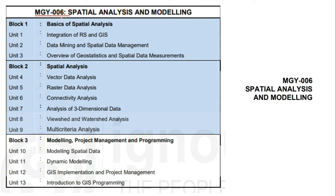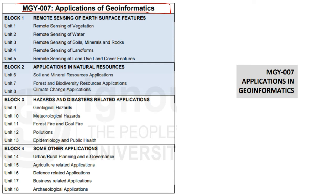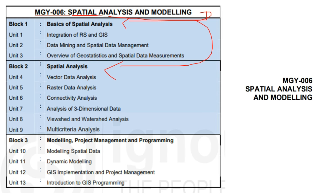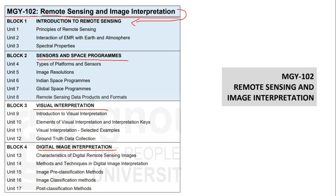The second Semester 2 subject is MGY006 — Spatial Analysis and Modeling — covering basics of spatial analysis, spatial analysis modeling, project management, and programming. The third subject covers applications of geoinformatics, including remote sensing of earth surface features, natural resources, hazards and disaster management, and applications in urban and rural planning, agriculture, defense, business, and archaeology.